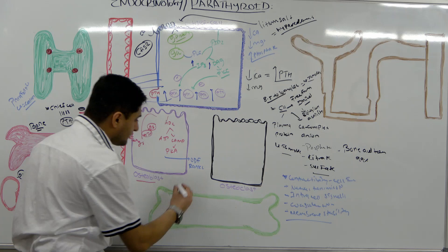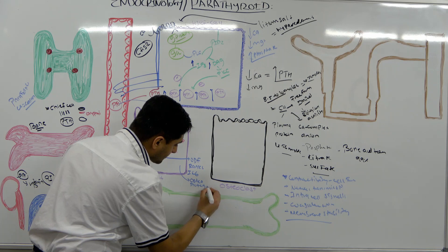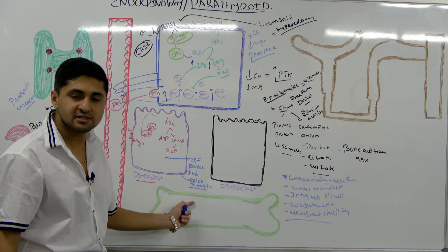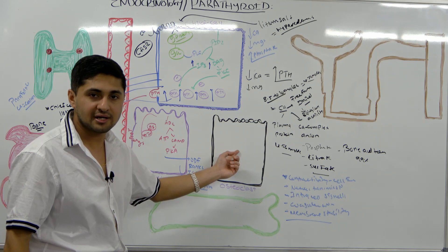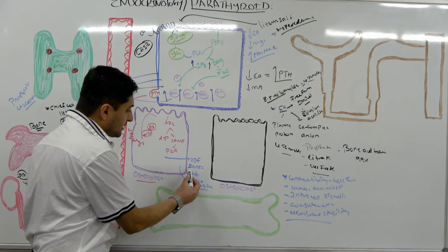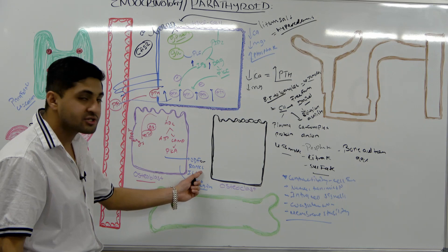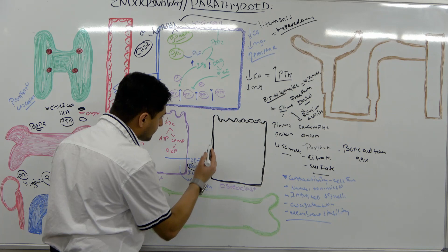ODF can also be called RANKL — receptor activator of nuclear kappa-B ligand. Other proteins produced include interleukin-6 and osteoprotegerin. Osteoprotegerin belongs to the tumor necrosis factor family of proteins and has very important functions: it decreases the mobilization of calcium and phosphorus. RANKL and ODF are the same thing.